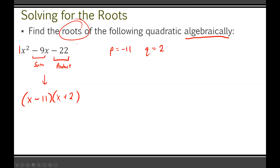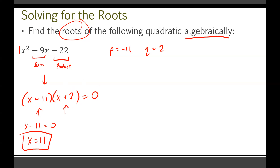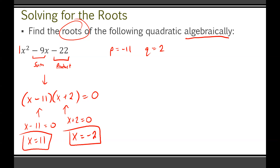The question asks for the roots, meaning the x-intercepts — that's where you set this equal to 0. Because it's factored, it equals 0 when either factor equals 0. If x minus 11 equals 0, adding 11 on both sides gives x equals 11 — that's one x-intercept. If x plus 2 equals 0, subtracting 2 gives x equals negative 2 — that's the other x-intercept. Those are your two roots. If you used the quadratic formula you'd get the same answers, just with more work.